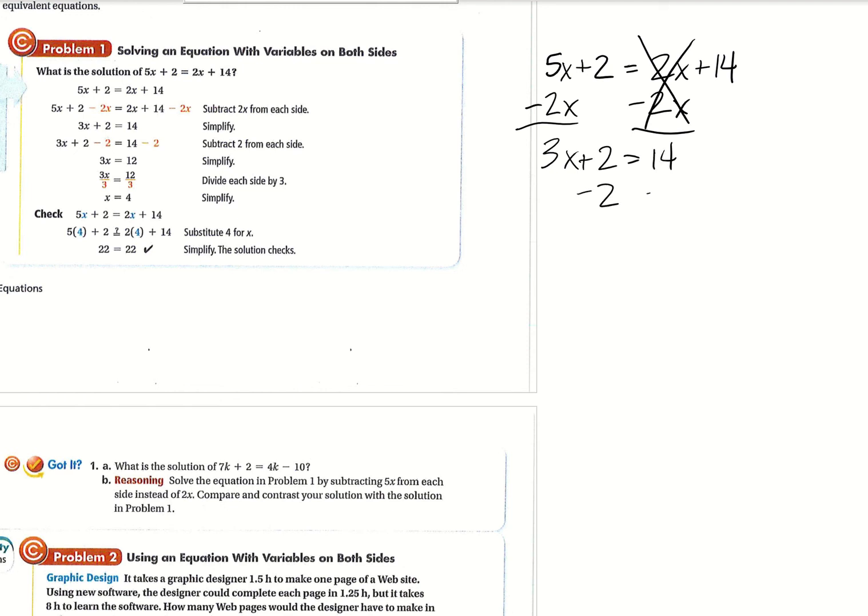and that one will leave you with 3x plus 2 equals 14. Then at this point, subtract 2 from both sides, 3x equals 12, and then if you divide both sides by 3, you'll be left with x equals 4.